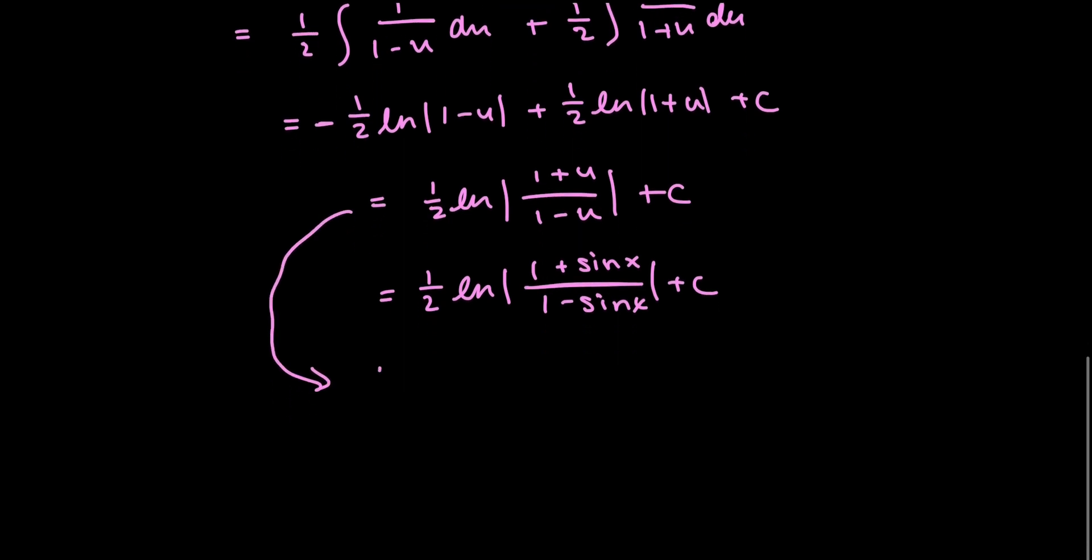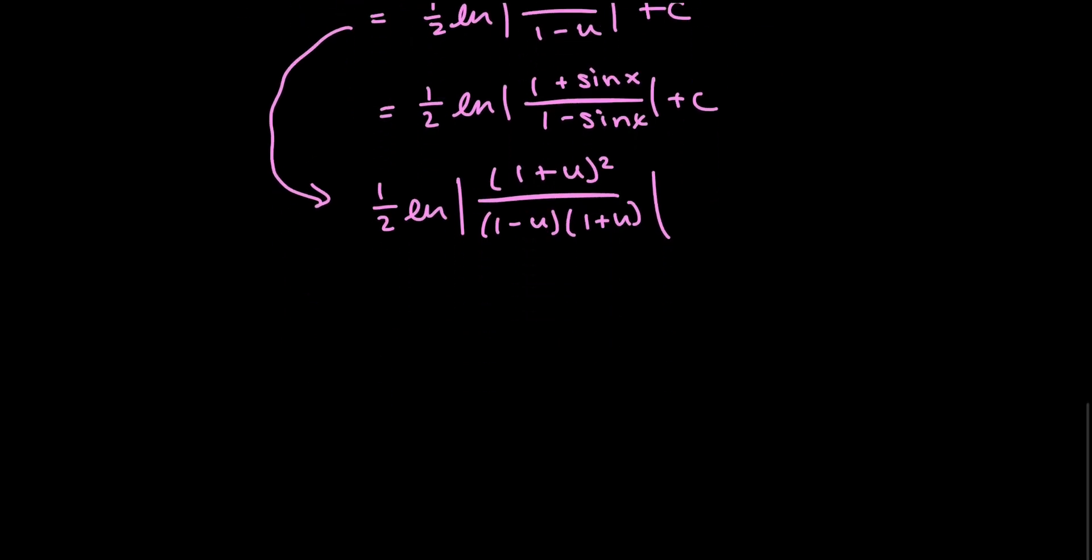So from this step, I'm going to multiply the inside of the log by a factor of 1 plus u in the top and the bottom. So I have 1 plus u squared over 1 minus u times 1 plus u. I'm also going to be ignoring the constant c for now.